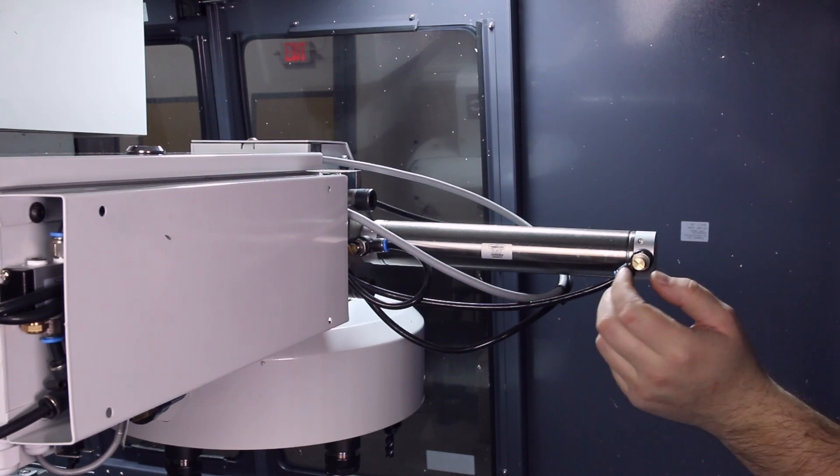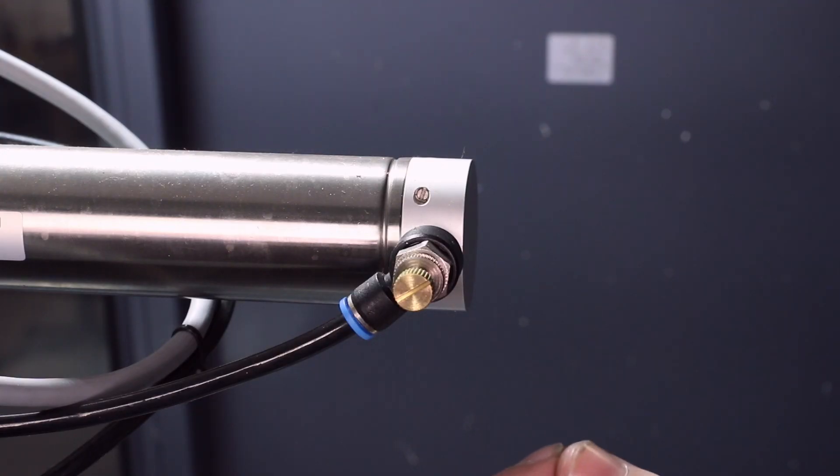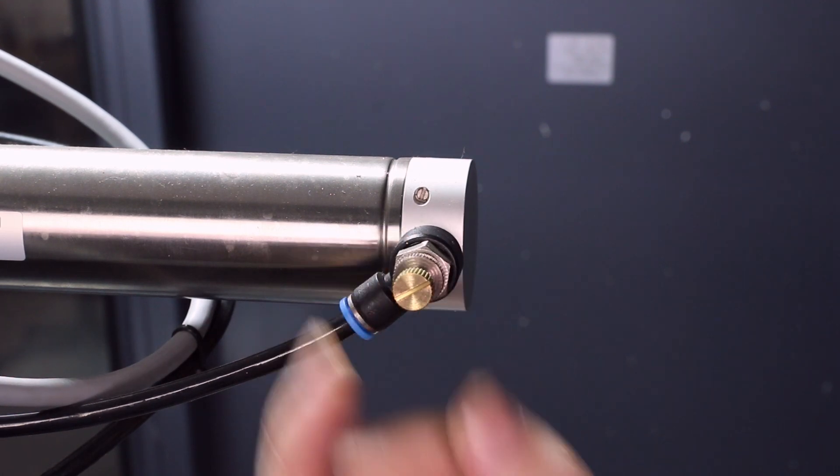Once the speed is adjusted to your satisfaction, lock the valves into place by turning the interior knobs clockwise.